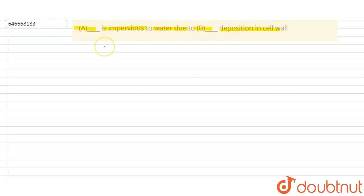So when we talk about A, here is basically the cork cambium. Cork cambium is basically impervious to water. When we talk about cork cambium, cork cambium is basically a type of lateral meristem.